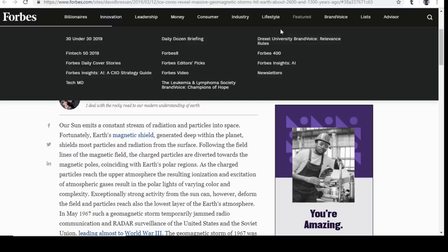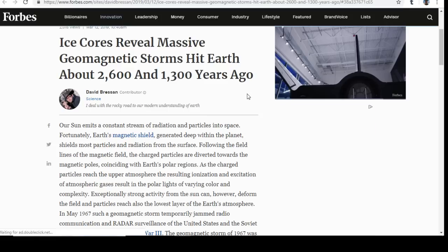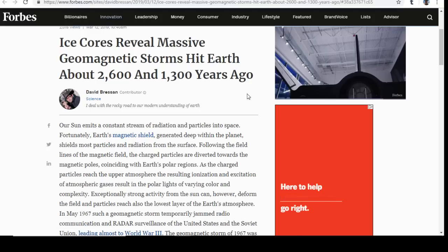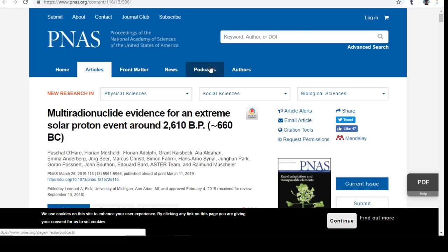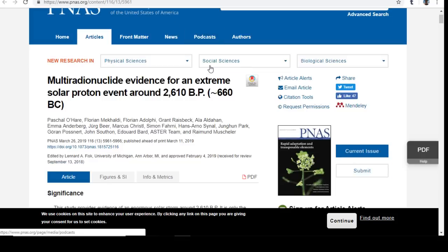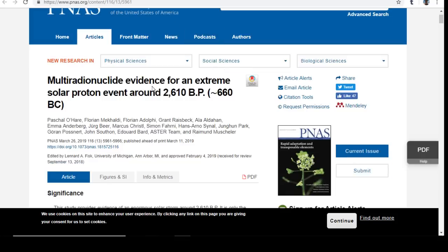This is from Space Weather. It's so fascinating when you look at all the puzzle pieces. It does look like we go through these cycles at regular intervals. Ice cores reveal massive geomagnetic storms hit the Earth about 2,600 and 1,300 years ago. We start seeing some numbers repeat themselves. This is from the Proceedings for the National Academy of Sciences, talking about evidence for an extreme solar proton event around 2,610 years before now—basically about 660 BC.